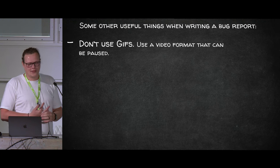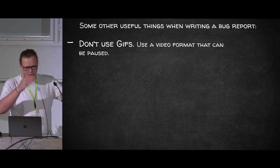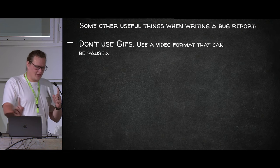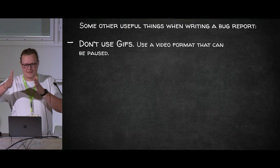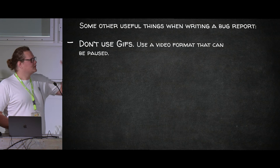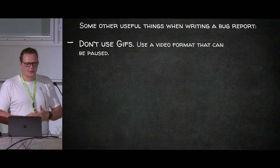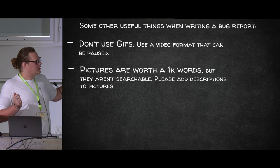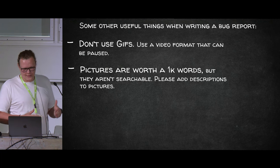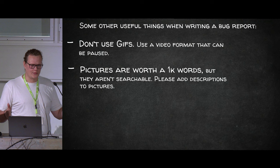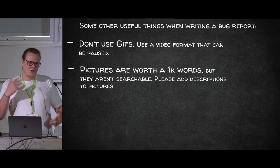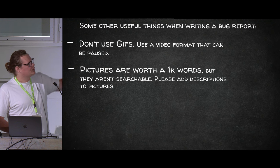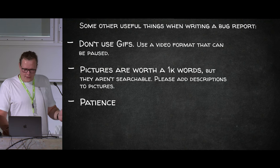Some other useful things when writing bug reports: please don't use GIFs — use a video format that can actually be paused. If you record a two-minute workflow and the critical steps are only three seconds, it's very annoying to wait for the loop. Use a file format where a developer can pause and scrub through it. Also, pictures are worth a thousand words but they aren't searchable — so add descriptions and annotations to your images so the bug history remains searchable.